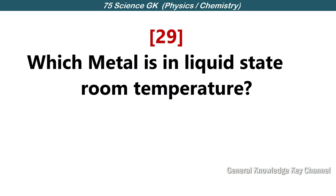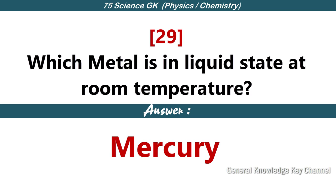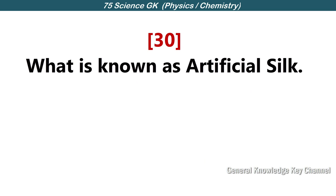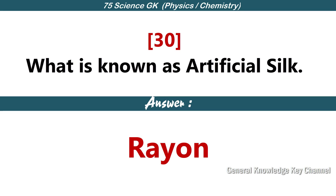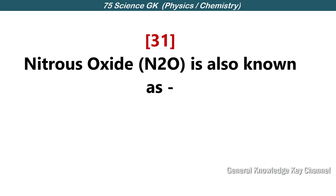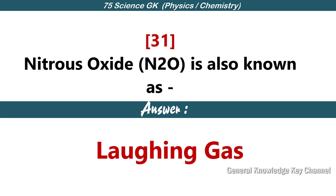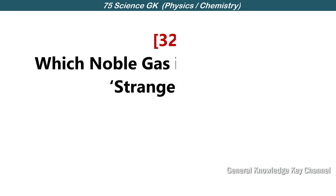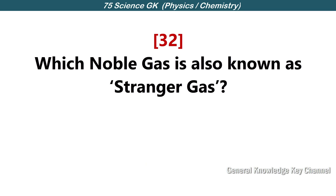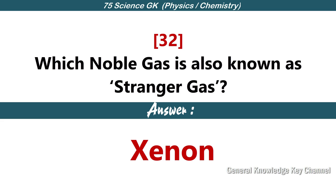Which metal is in liquid state at room temperature? Mercury. What is known as artificial silk? Rayon. Nitrous oxide is also known as laughing gas. Which noble gas is also known as stranger gas? Xenon.